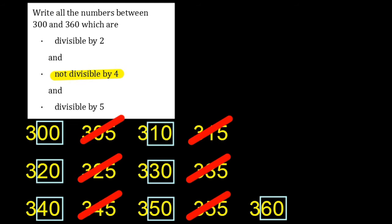This leaves me with 310, 330, and 350. They are the three numbers which are divisible by 2, not divisible by 4, and divisible by 5.